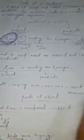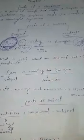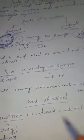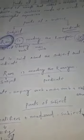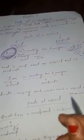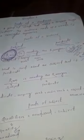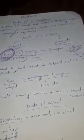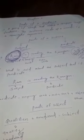The other part is the predicate. What is the predicate? What is said about the subject — that is the predicate. Whatever tells about the subject is called the predicate.